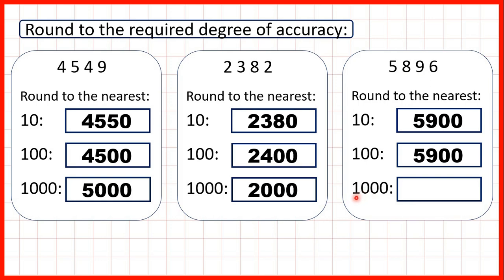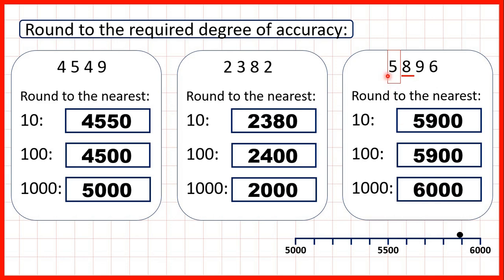Finally, let's round to the nearest thousand. We circle our thousands digit, underline the digit to the right. Because it's five or more, we need to round up, which means this five becomes a six, so we get six thousand. Five thousand eight hundred and ninety-six is closer to six thousand than it is to five thousand, so that's why we round up.